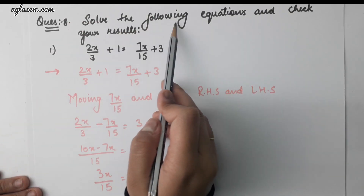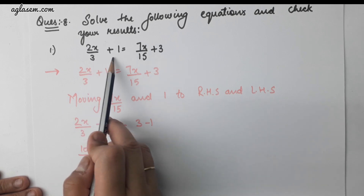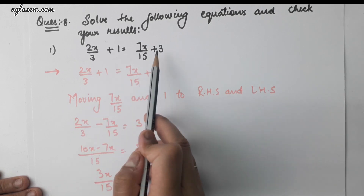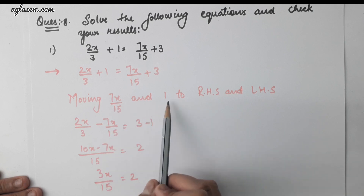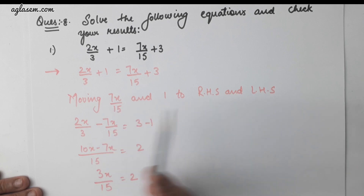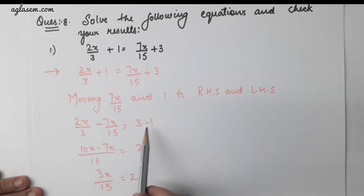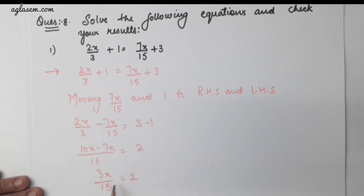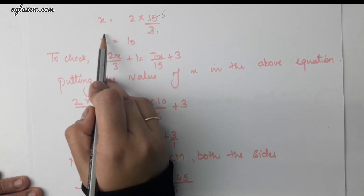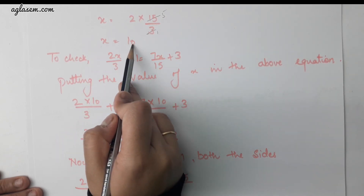Question number 8: solve the following equation and check your results. 2x by 3 plus 1 is equal to 7x by 15 plus 3. Moving 7x by 15 and 1 to their respective sides, we get 2x by 3 minus 7x by 15 equals to 3 minus 1. Taking LCM, 10x minus 7x divided by 15 equals to 2, so 3x divided by 15 equals to 2. Therefore, x is equal to 10.